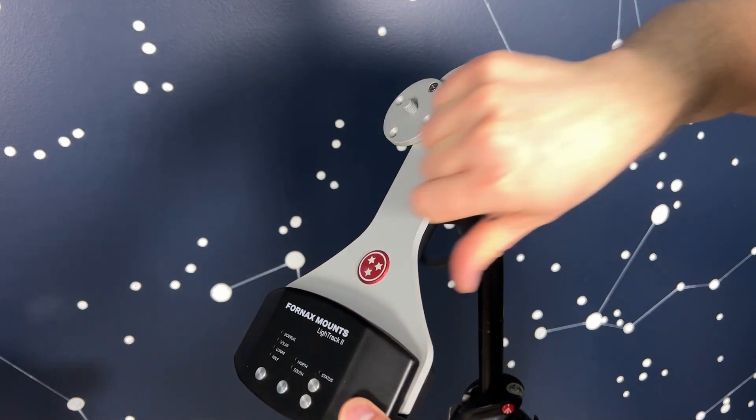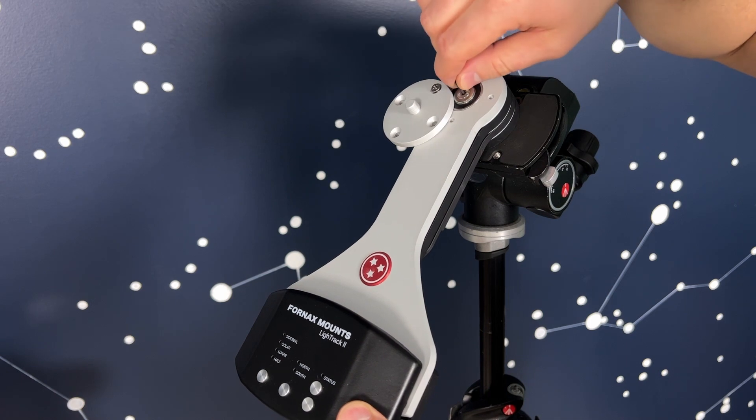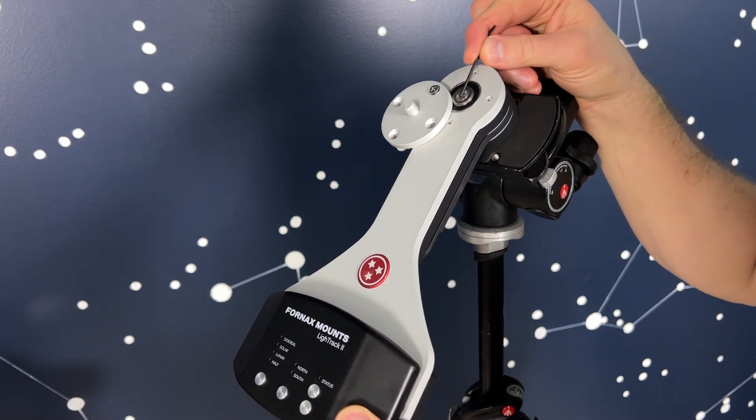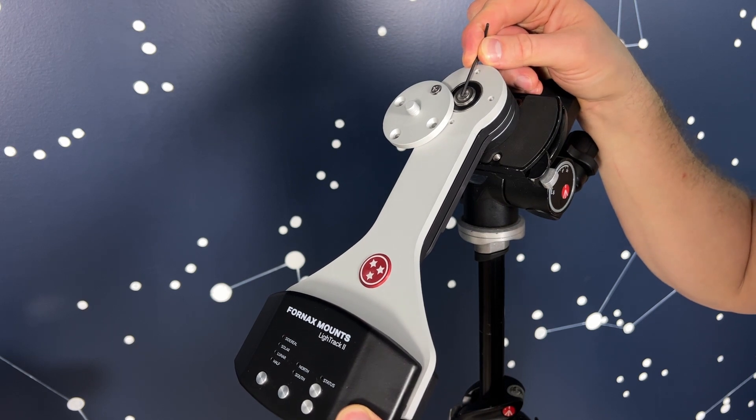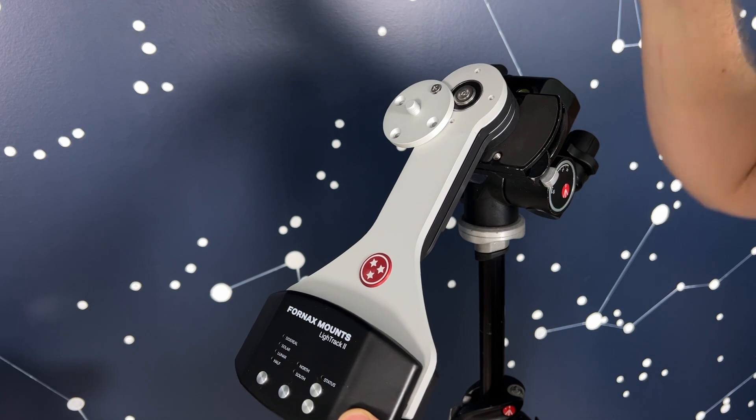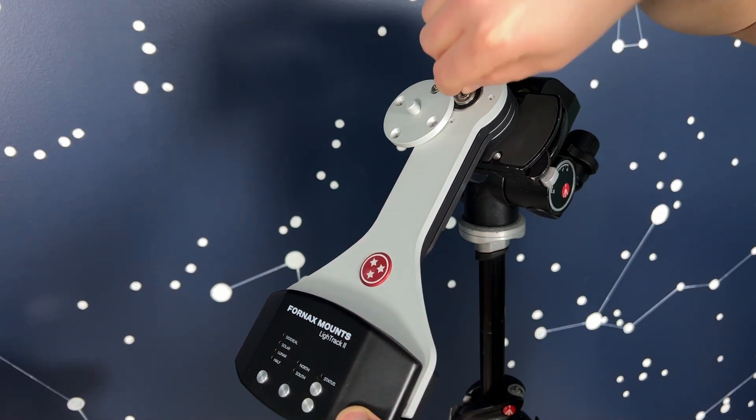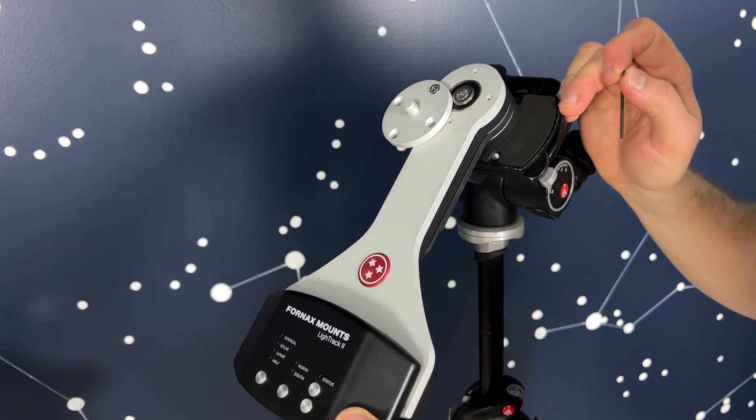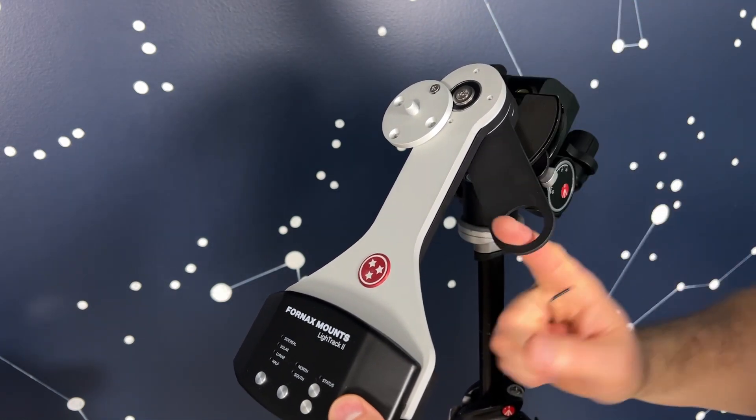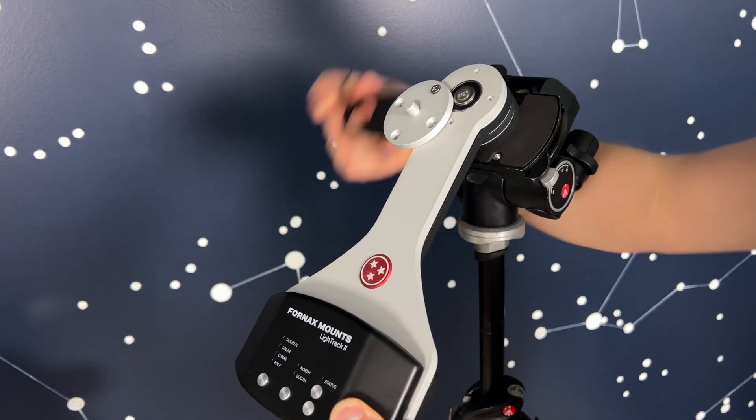It's worth noting that there is Loctite on this screw, so it might provide some resistance when you are trying to tighten it up. However, you should with proper leverage be able to tighten that just a smidge. When you have it at the correct friction where your polar arm is how you'd like it, tighten this screw back.